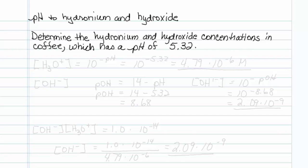This is how pH is related to hydronium and hydroxide concentration. We are to determine the hydronium and hydroxide concentrations in coffee, which has a pH of 5.32.